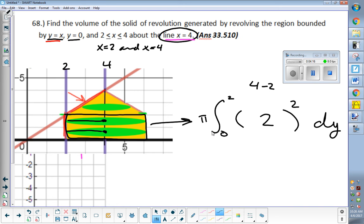Now we're going from two to four, we're stacking the second chunk. It's still pi r squared. It's still dy, because I'm still stacking upwards. It's a dy problem.